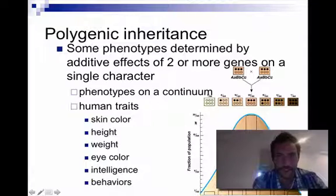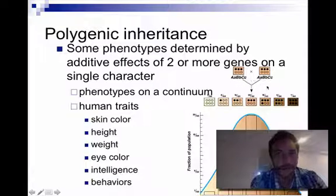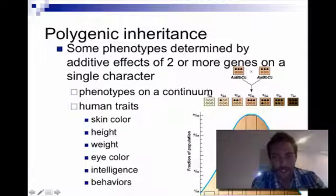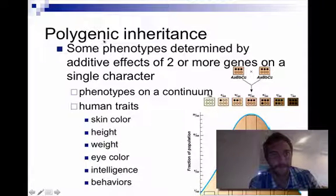We've got all these different genes related to melanin production. This is the normal distribution that you should all be intimately familiar with, and that's also a characteristic of polygenic traits.